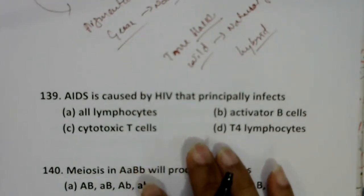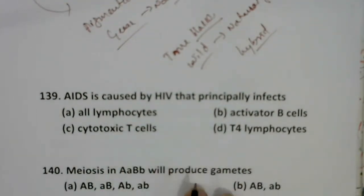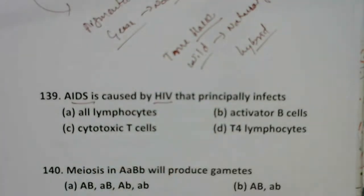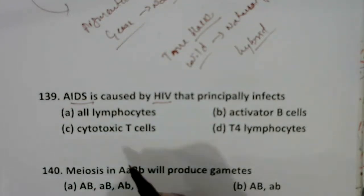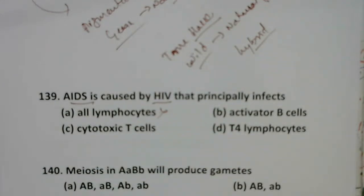Question on AIDS caused by HIV. HIV, the Human Immunodeficiency Virus, principally infects not all lymphocytes, but a particular type of lymphocyte that has memory. Such lymphocytes are destroyed or attacked by HIV viruses.